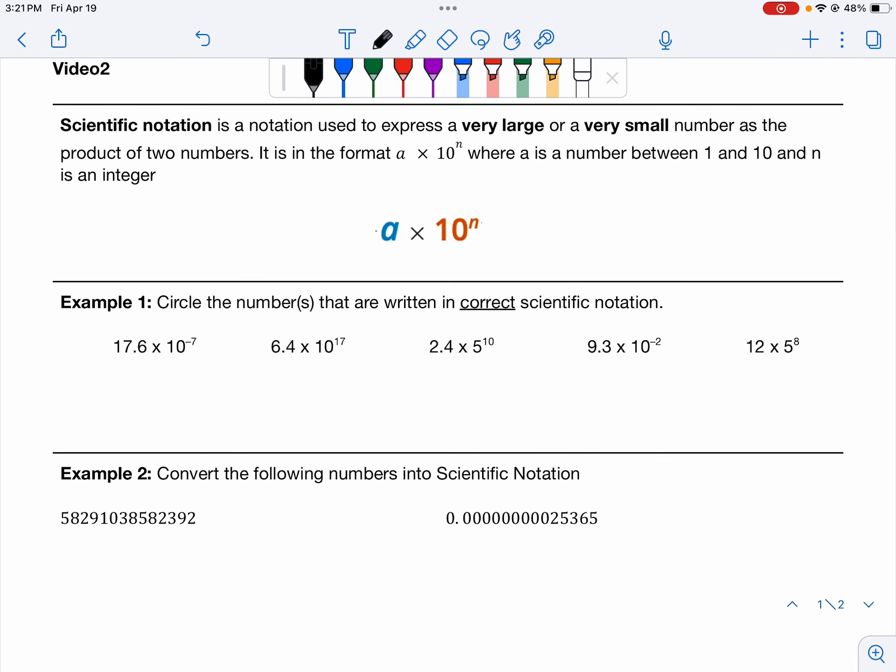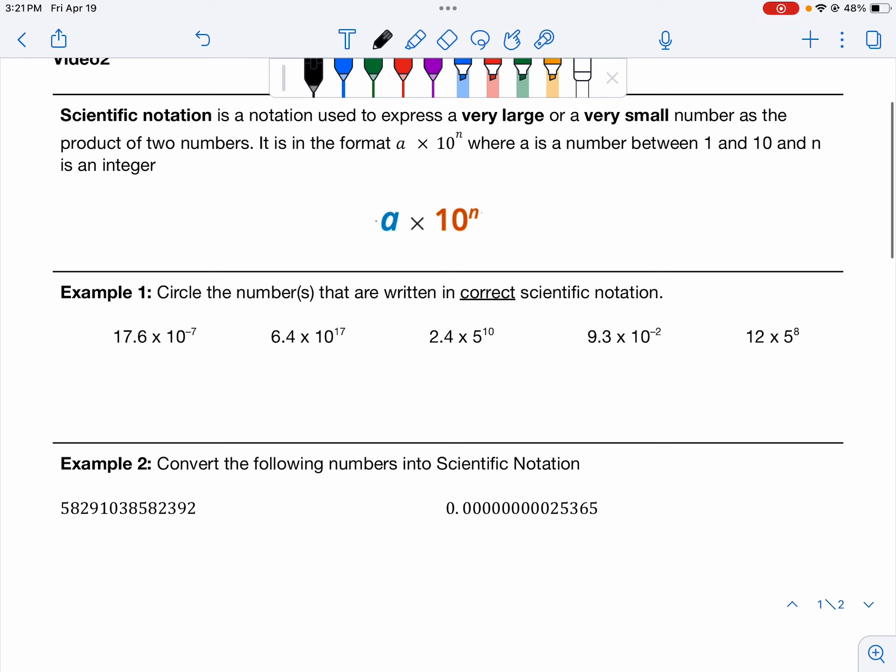So we are going to circle the numbers that are in correct scientific notation. The first one fails because of the 17. It's not between 1 and 10. Now let's look at the next thing. There's three things that have to be perfect. This first number has to be between 1 and 10. 6.4 satisfies this. This number must be a 10, and this number must be an integer. All three of those things work, so that number is in scientific notation.